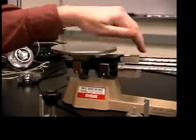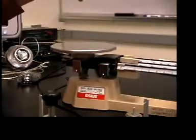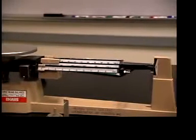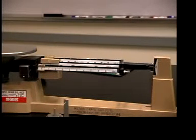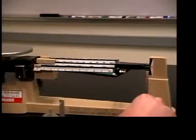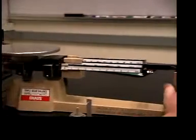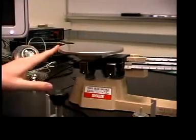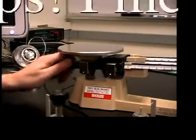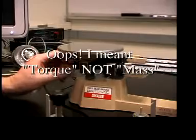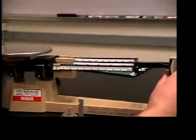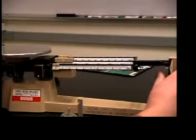And it's also a good idea, whenever you use a balance, to make sure it's zeroed. So this one is slightly below zero over here. And so on the other side of the balance, there's a knob that you can turn to add more mass to this side, or less mass, by moving it in and out. So I'm going to move it out just a little bit.